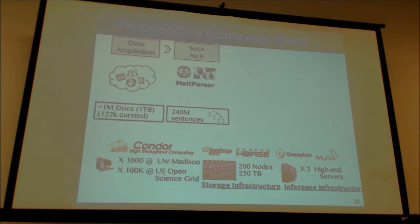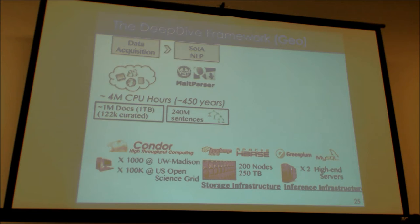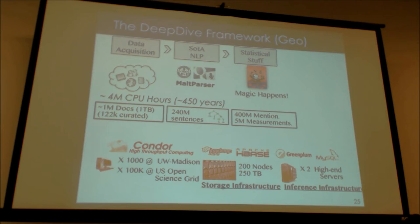We run these tools over the corpora — sometimes 4 million CPU hours or 450 CPU years of processing. What we get out are structured sentences: sentences are diagrammed, NERs are tagged, named entities are tagged, co-reference is resolved, pronouns are mapped. That's our observation. Then the statistical magic happens, and results get surfaced to some kind of web processing infrastructure.